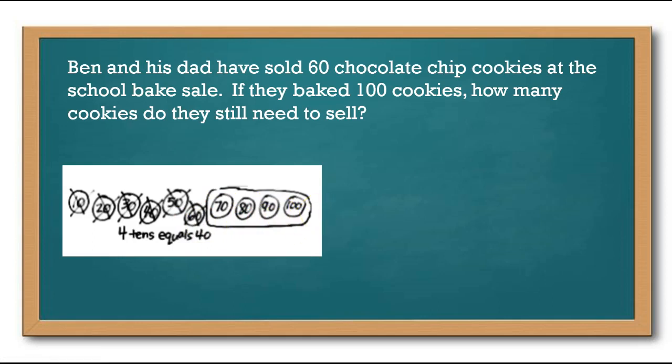Then you could have crossed out 60 cookies because they've already sold 60 cookies. So you cross out 10, 20, 30, 40, 50, 60, which leaves you how many here? It doesn't leave you 4 cookies because remember, each of these cookies is worth 10. So you'd have to count 10, 20, 30, 40 cookies. So they still need to sell 40 cookies.